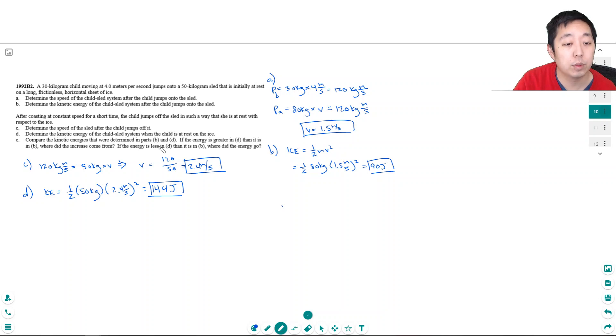Compare the kinetic energies determined in parts B and D. If the energy is greater in D than it was in B, where did the increase come from? So, the energy did go up. Well, the child imparted all of the... That's a good question. The energy went up.